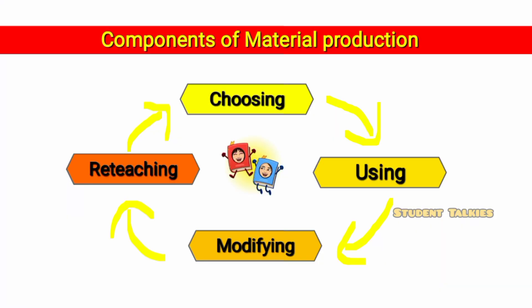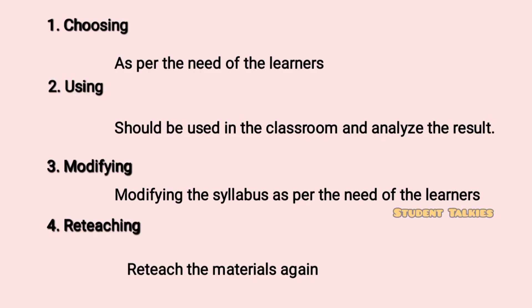Components of material production are: choosing, using, modifying, and reteaching. Choosing means materials must be used as per the need of the learners. Using means materials should be used in the classroom and the result analyzed. Modifying means modifying the syllabus as per the need of the learners. Reteaching means to reteach the materials again.